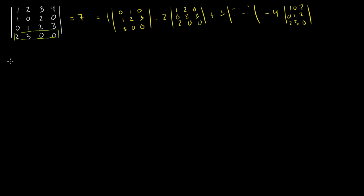Before you pick an arbitrary row or column, you have to remember the sign pattern. You switch signs on the coefficients not just as you go across a row, but also as you go down a column. The general pattern for a 4 by 4 is this checkerboard: plus, minus, plus, minus; minus, plus, minus, plus; plus, minus, plus, minus; minus, plus, minus, plus.